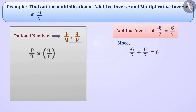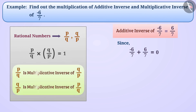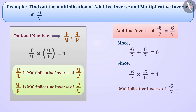If the multiplication of any two rational numbers is 1, then both rational numbers are multiplicative inverse of each other. Since (-6/7) × (-7/6) = 1, therefore the multiplicative inverse of -6/7 is -7/6.